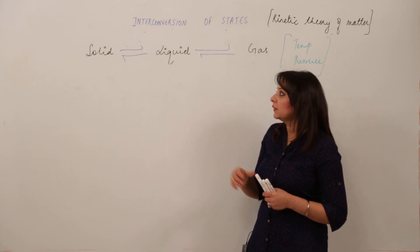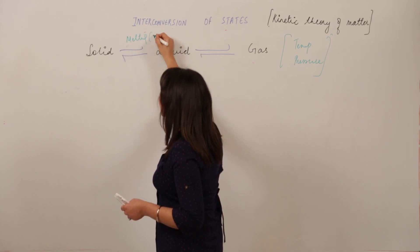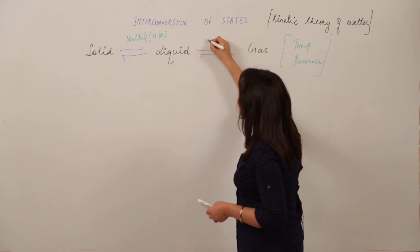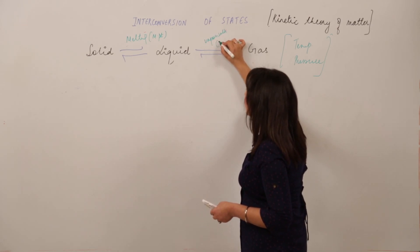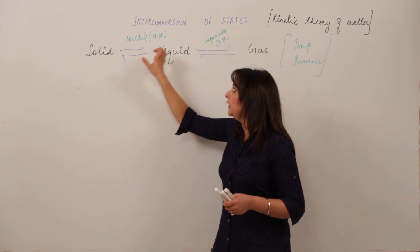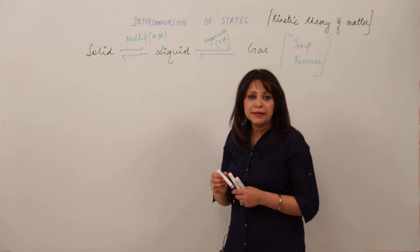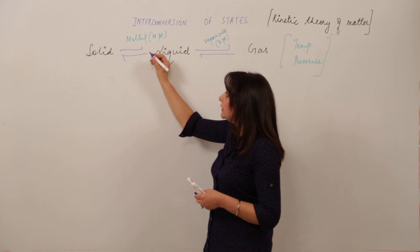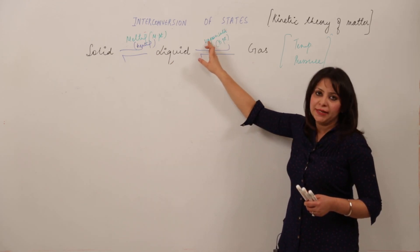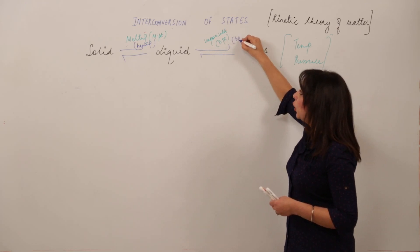The conversion of solid to liquid is called melting, and it occurs at the melting point. The conversion of liquid to gas is called vaporization, and it occurs at the boiling point. To convert solid to liquid, we increase the temperature — melting occurs on heating. Similarly, to convert liquid to gas, the temperature at which liquid converts to vapor is called the boiling point, and it also occurs on heating.